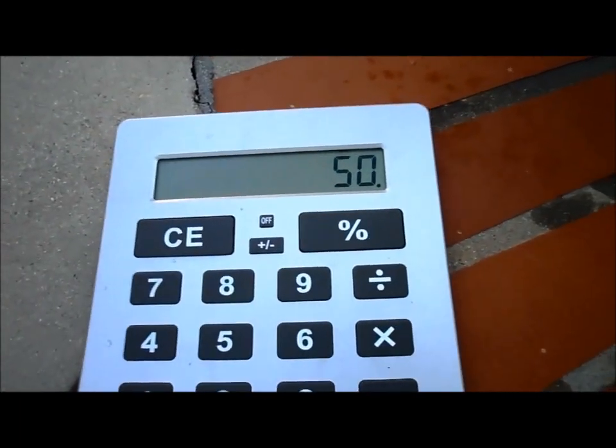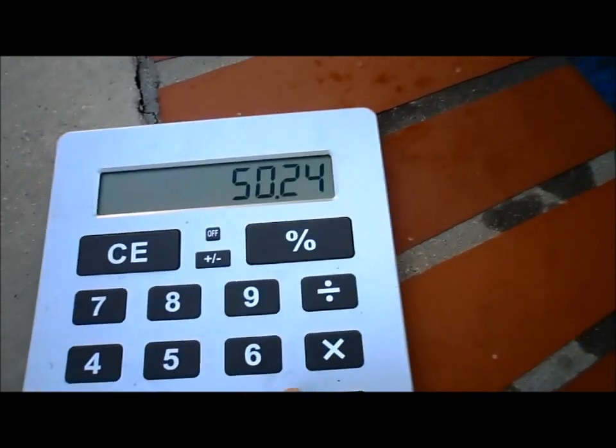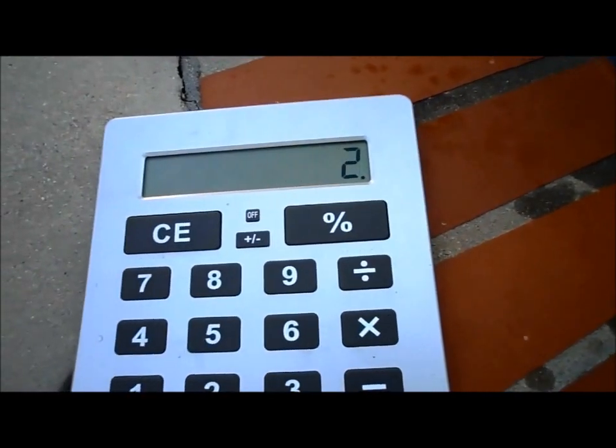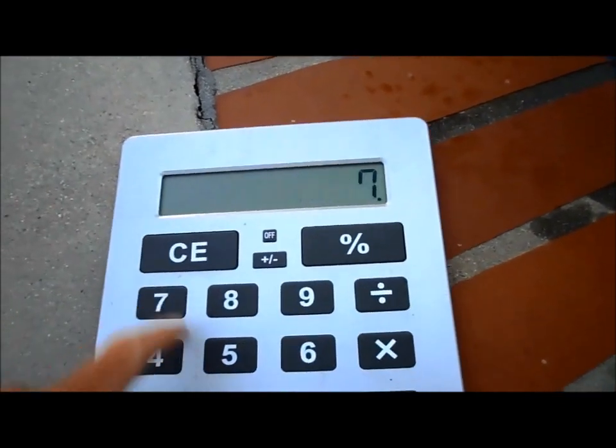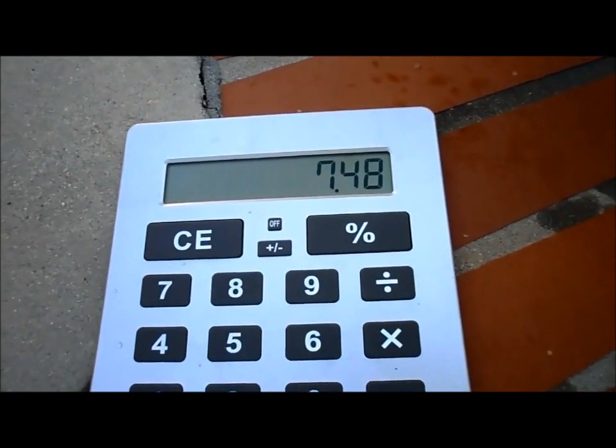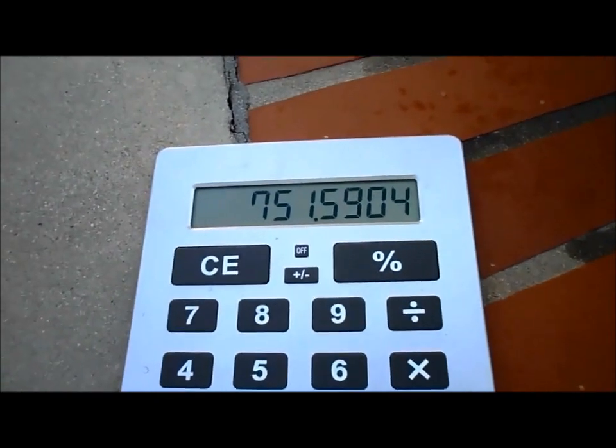So we'll take 50.24 times 2, which is 100, times 7.48, which is the number of gallons per square foot of water. And the spa has 750 gallons of water in it.